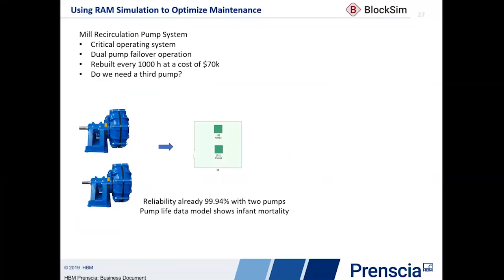In doing that analysis, what we found was that the model showed infant mortality — meaning there were more failures soon after the pump was repaired and put back into service than after a longer period of time. That pointed us to the possibility that there were actually problems associated with the repair of that particular pump. So that was good information to pass back to the reliability engineer — they could then work with the maintenance team to understand what's going on with the rebuild. It also pointed us to the fact that maybe this 1,000-hour rebuild time was a result of the fact that they were seeing infant mortality.